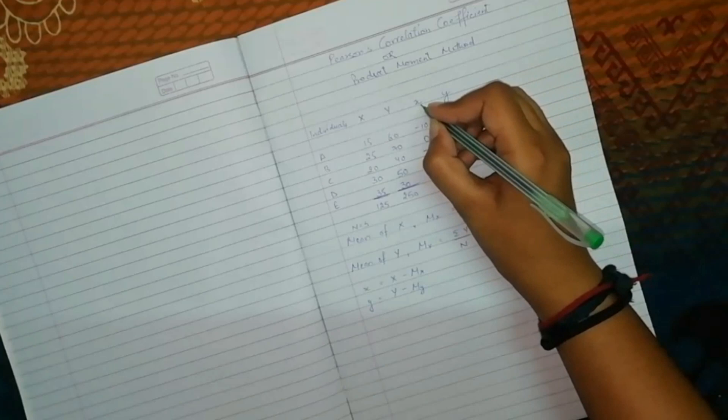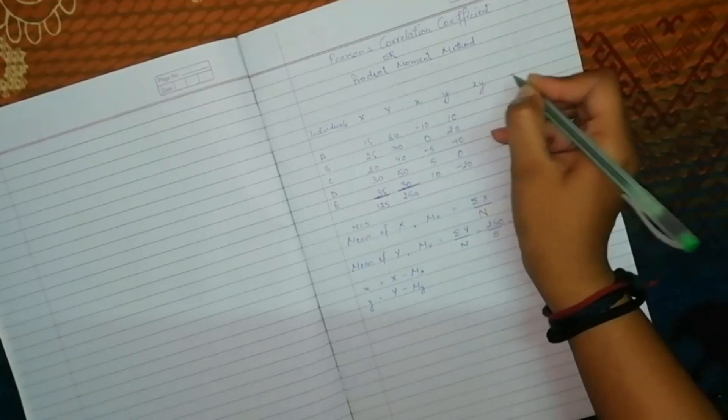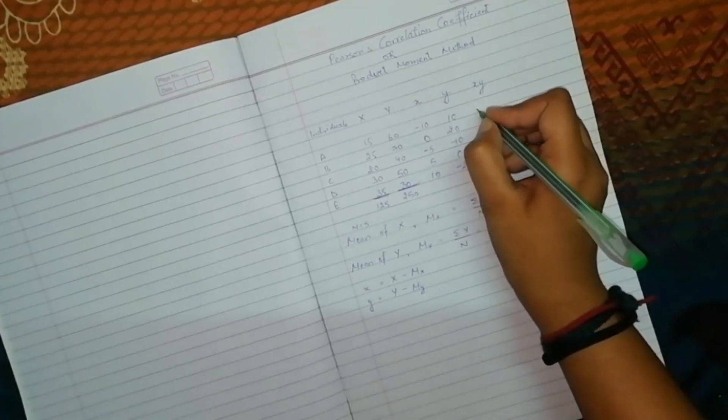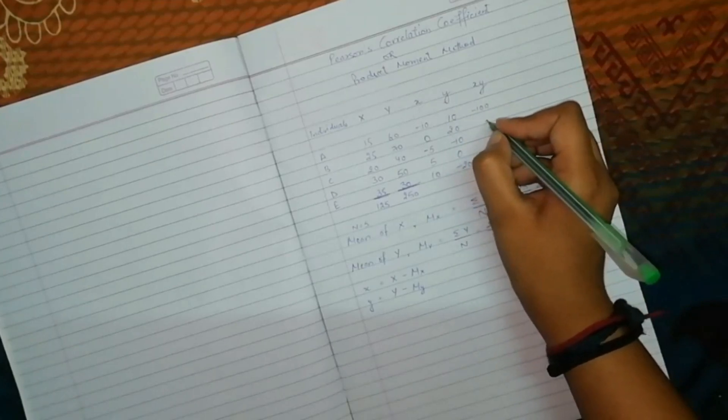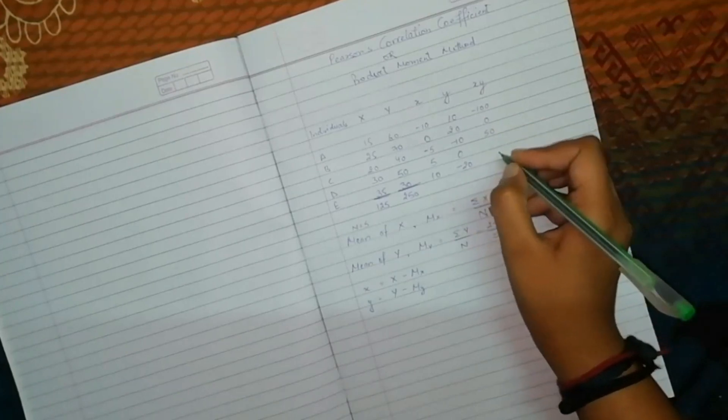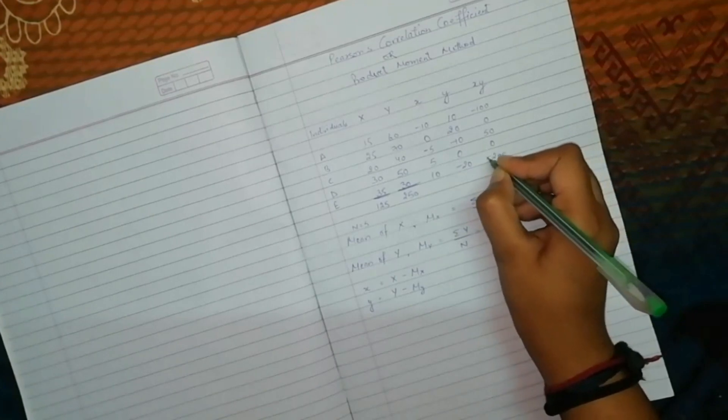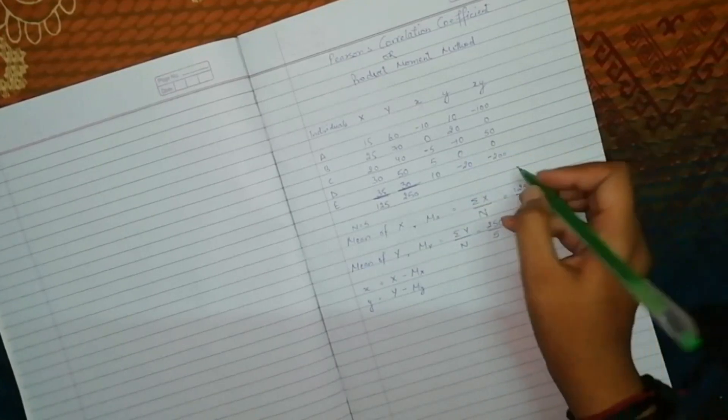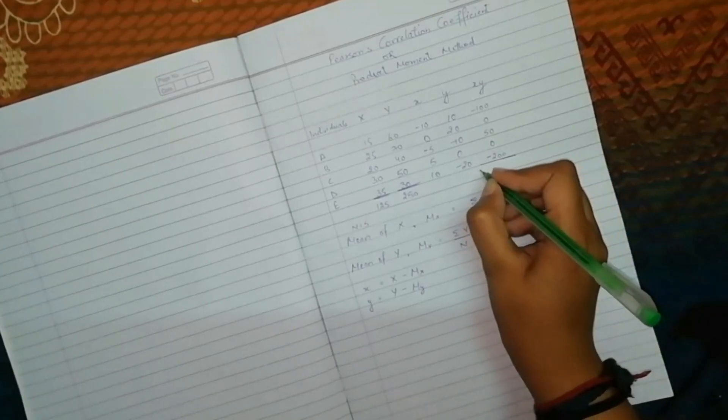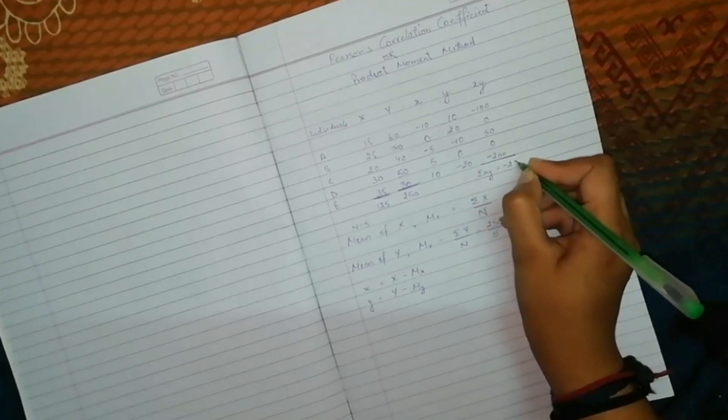Now, what do you have to do? This small x and small y, multiply them here. Minus 10 into 10 is minus 100. Then, 20 into 0 is 0. Minus 5 and minus 10 is 50. 5 into 0 is 0. And, this will be minus 200. And, this will be added. So, sum of xy is equal to minus 250.